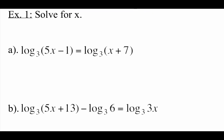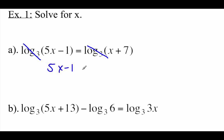So here we go. First example: we've got log base 3 of (5x minus 1) equals log base 3 of (x plus 7). Very first thing I see is we have base 3 logarithms on both sides, so I'm thinking this is going to be a one-to-one property equation. So let's just cross off those log base 3s and look at it as 5x minus 1 equals x plus 7.